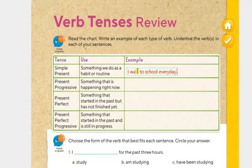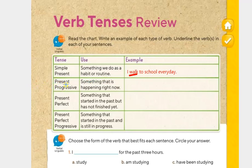That would be simple present because we are using this verb to describe something that we do as a habit or a routine. Remember, the instruction says underline the verbs in each of your sentences, so let's underline it. The verb is 'walk.' The next tense is present progressive. We use present progressive to express something that is happening right now. Think of a verb you can use in a sentence to describe something that is happening in this moment.